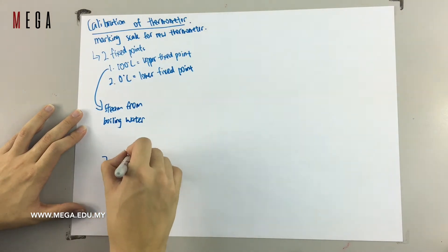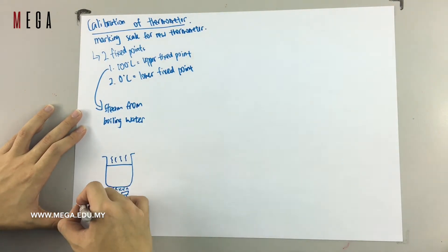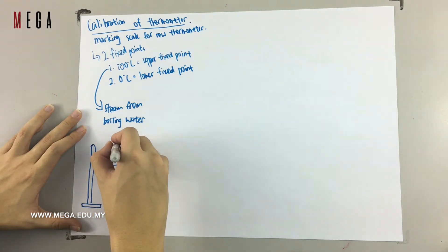So how do we get the fixed point? For steam point, you need to get the steam from boiling water and it must be 100 degrees Celsius. So you have to set up like the one that I have drawn in the video, and remember you don't take the boiling water, you take the steam from the boiling water.